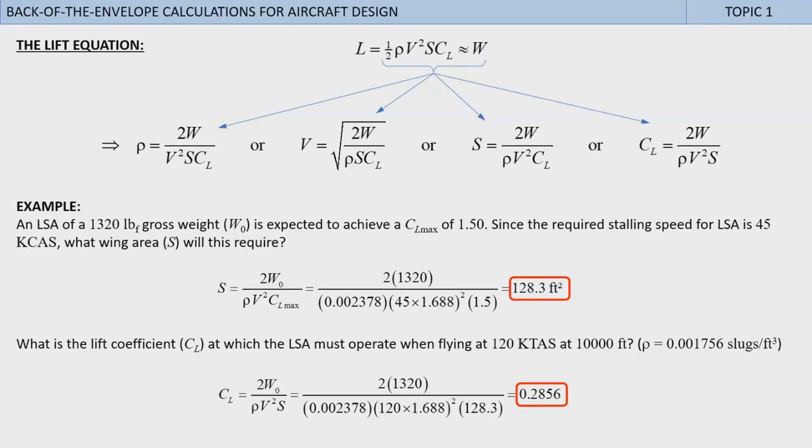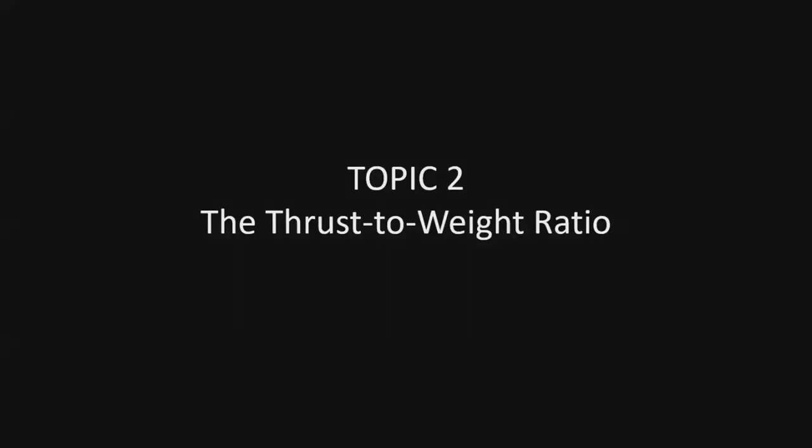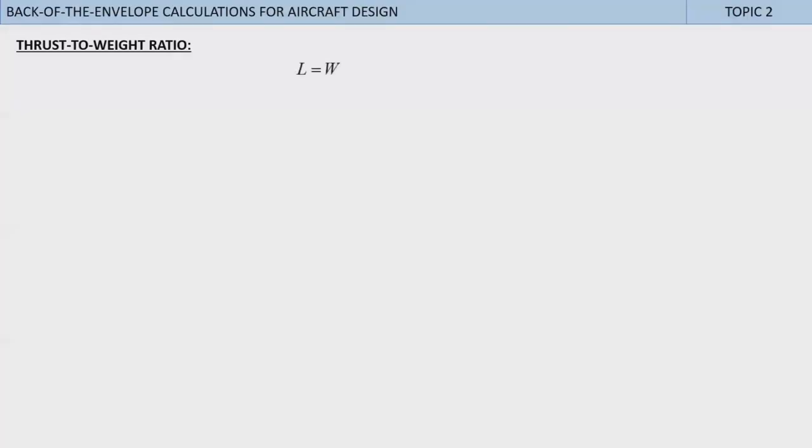Alrighty, let's go to topic 2. Topic 2: the thrust-to-weight ratio. Again, assuming steady-state equilibrium, it holds that the lift L must equal the weight W, and drag D must equal the thrust T. Note that this does not hold for climb or descent. Also of interest is the ratio between lift and drag, called L/D, or glide ratio, or lift-to-drag ratio, as shown here. It is one of the most important design parameters in aircraft design. Note that it is also written as LD.